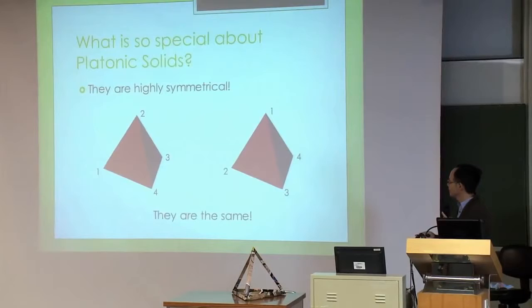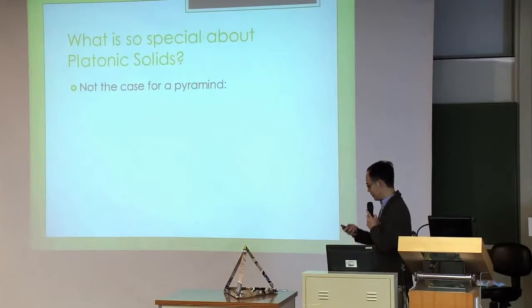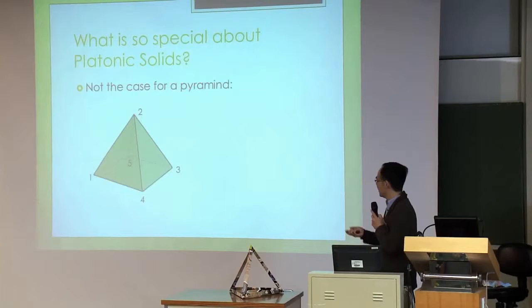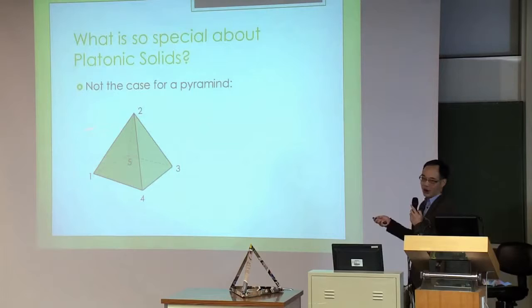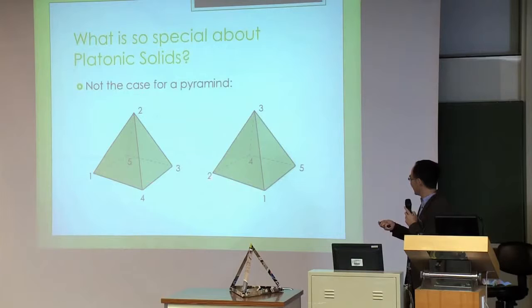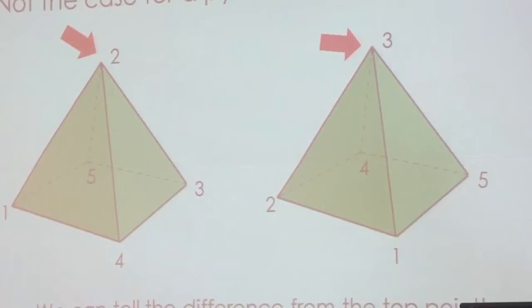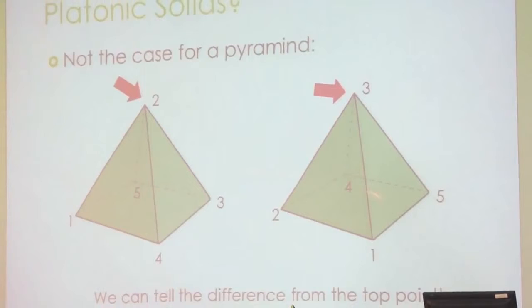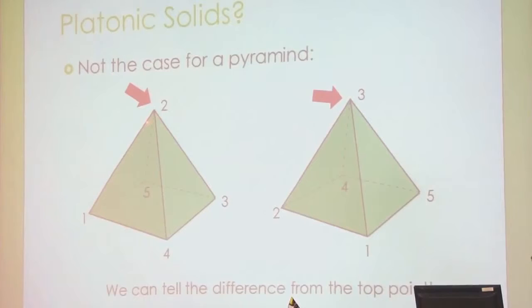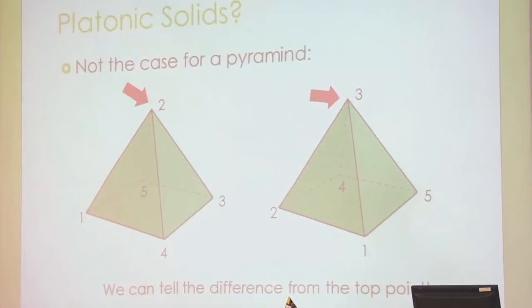Of course, such a property may not always be true. Imagine I have a pyramid - it looks similar, but a pyramid has a square base instead of a triangle. If I follow the same trick - take a pyramid and label the corners, then my friend labels them differently - I can tell the difference, because the point at the top gives away the answer. That top point is special and different from the others. So I can tell the two pyramids apart just by looking at how the top is labeled. In this sense, the tetrahedron has more symmetry than the pyramid.